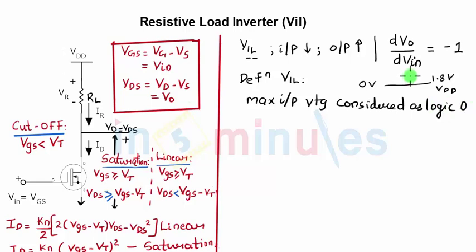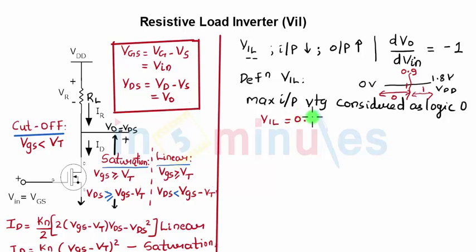Just as a reference, if 0 to 1.8 V is my total range, somewhere from 0 to 0.9 V will be the region where I consider my input to be logic zero, and anywhere above 0.9 to 1.8 V will be logic high. So VIL would be somewhere around 0.9 V — let's say VIL equals 0.8 V for this example.